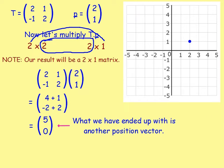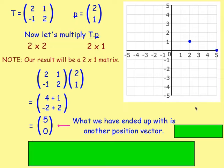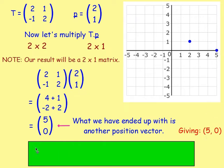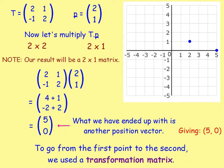What we have ended up with is a matrix, but really you can think of that as a position vector. Because we're thinking about it as a position vector, you can imagine from the origin this point here. So this point is going to be (5, 0). To go from the first point at (2, 1) to the second point at (5, 0), what we used was a transformation matrix.